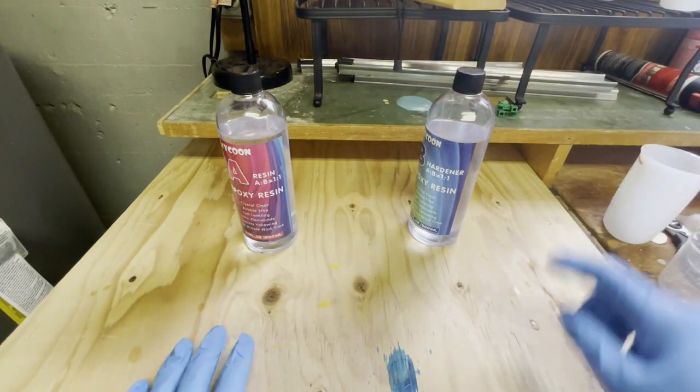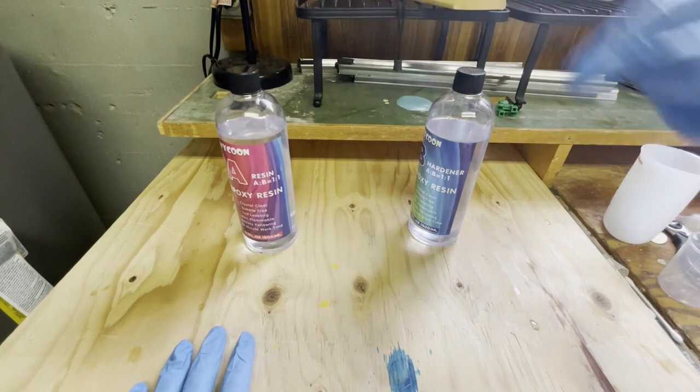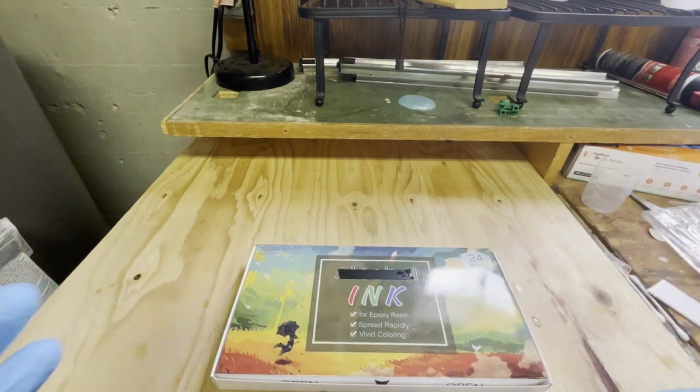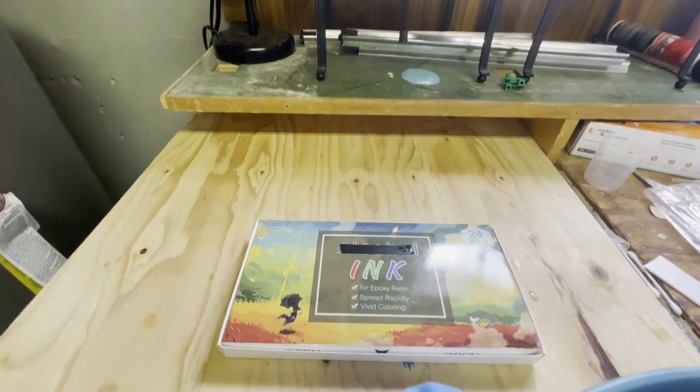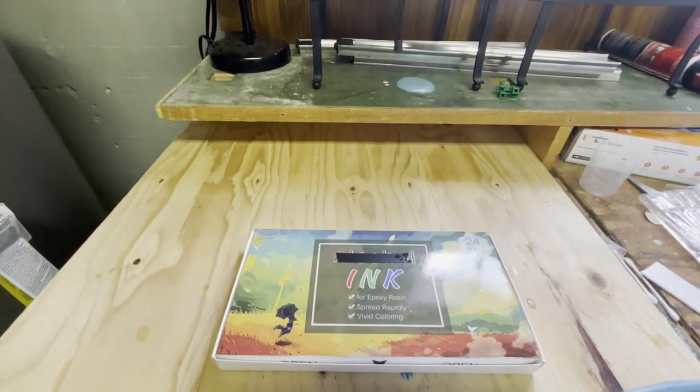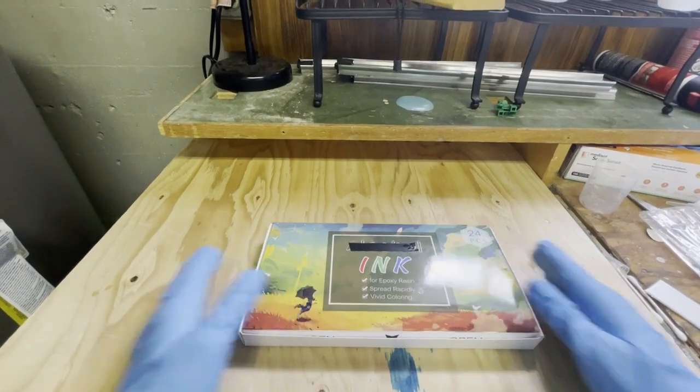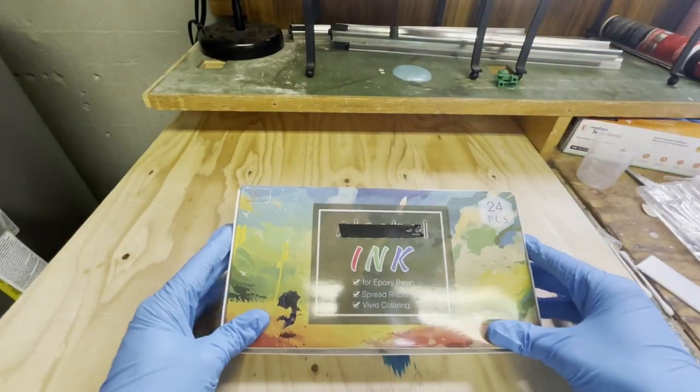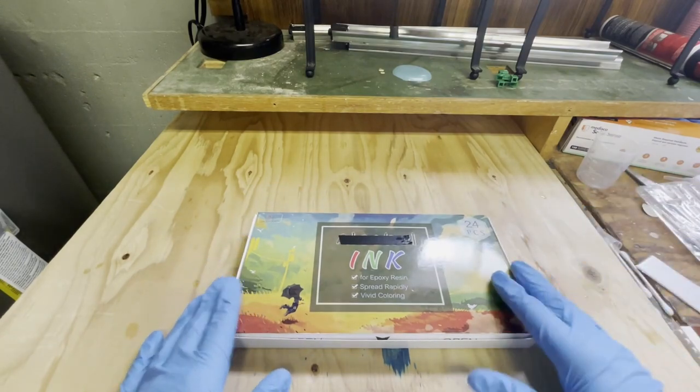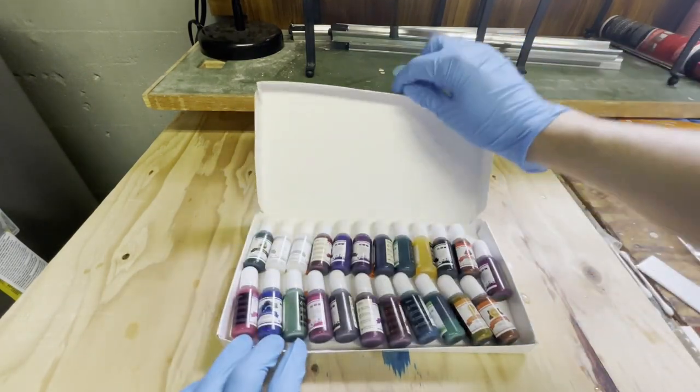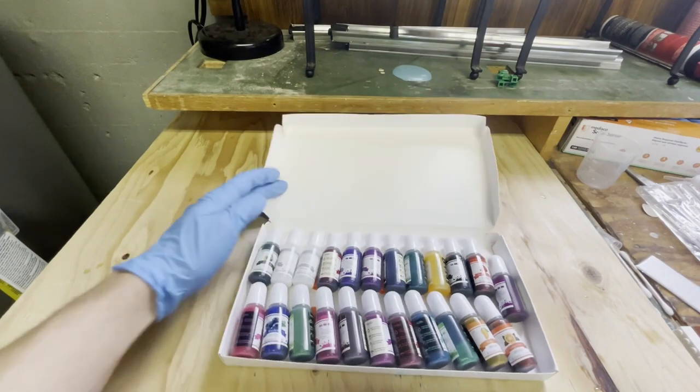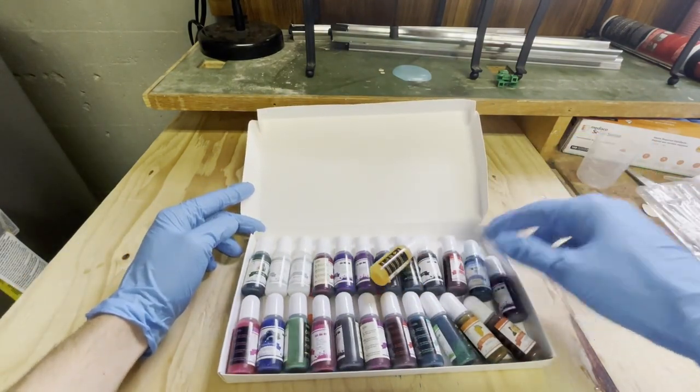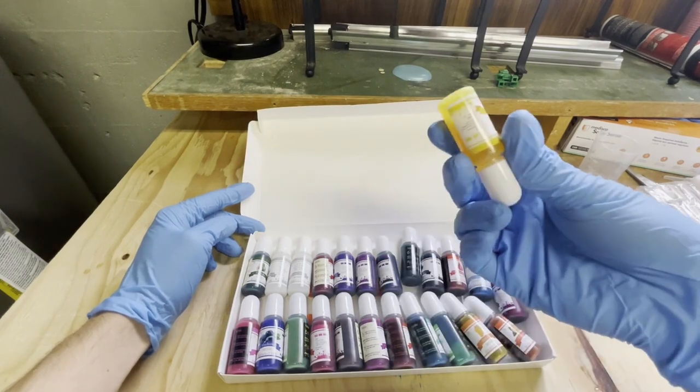As you can see the B liquid is the thinner one so it's going to go into the pouring container whereas the A liquid is going to be the mixing. We're going to pick a different color this time and select the color through random chance. Whichever color pops out when I stick the old color back in is what we'll go for. All right and we got a yellow. Lemon yellow it is.